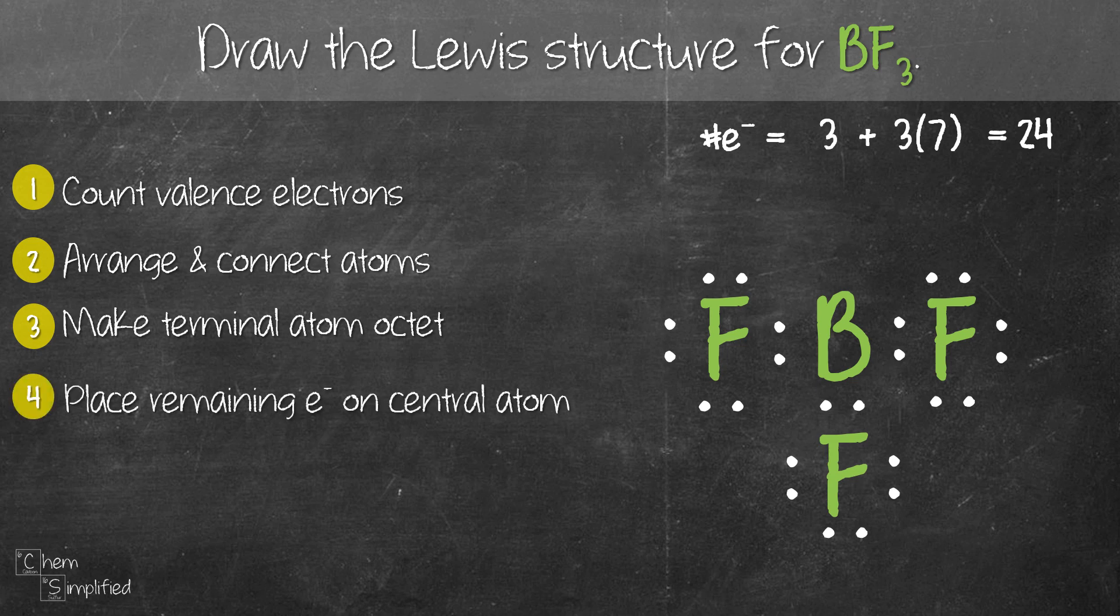We need to place any remaining electrons on the central atom, boron. Since we have 24 electrons total and have already used all of them, there's nothing left to place on boron. So we move on to the next step.